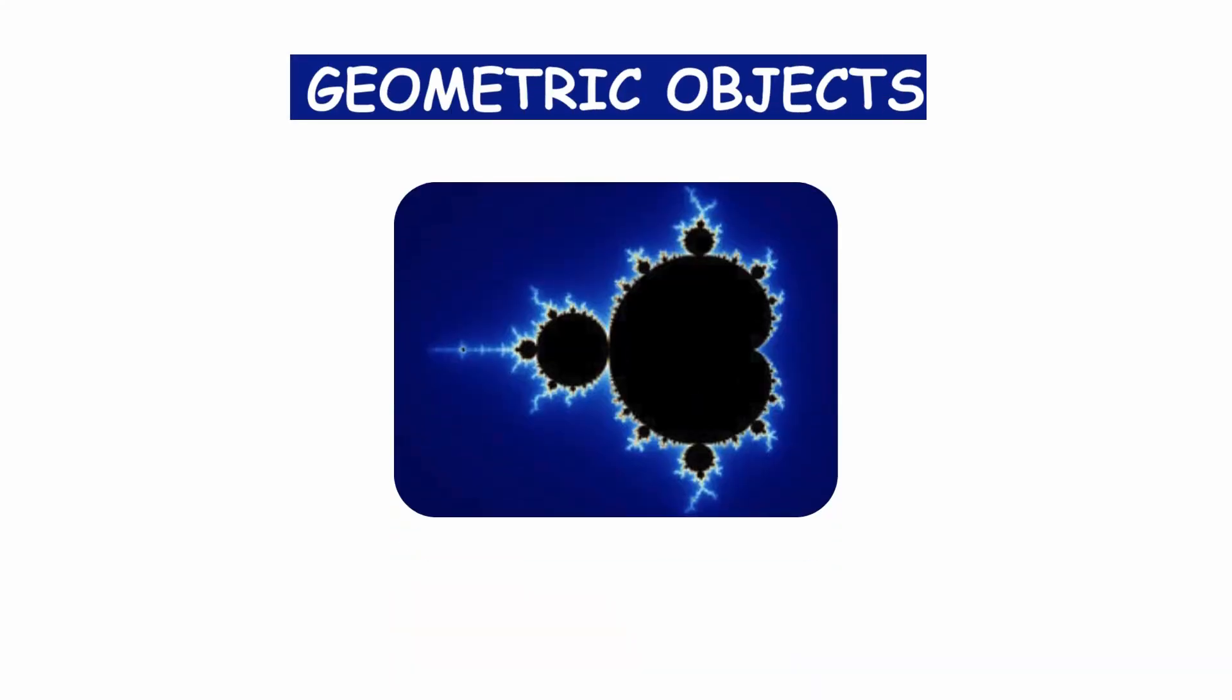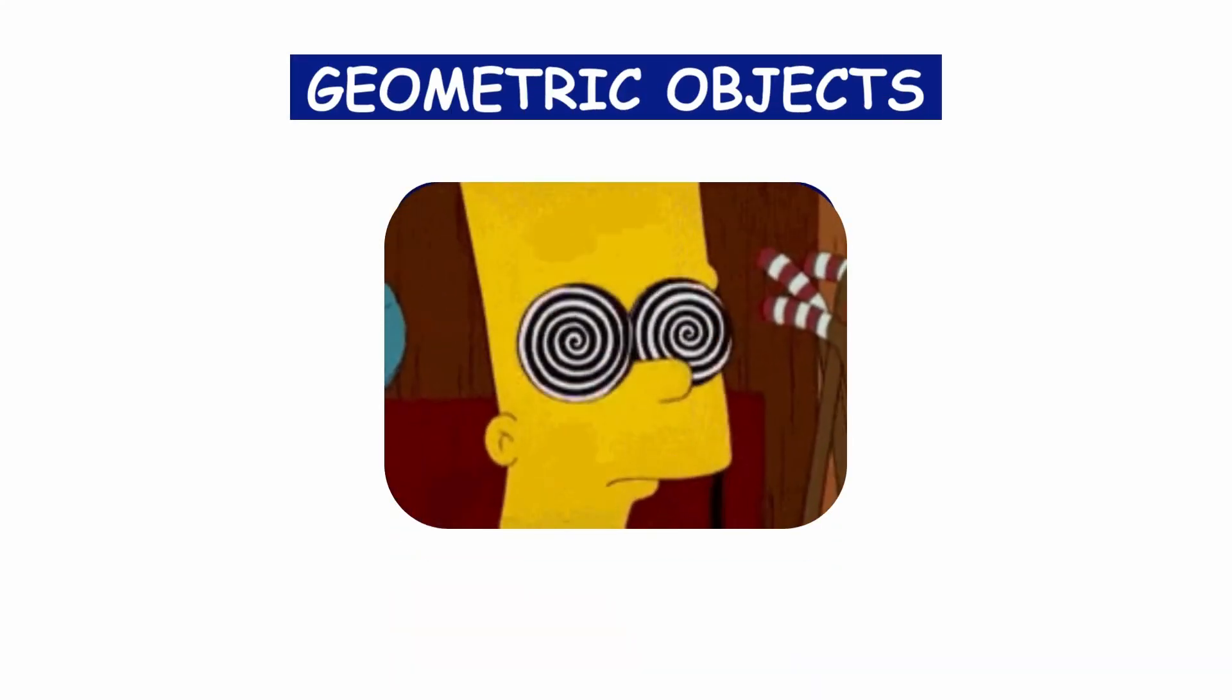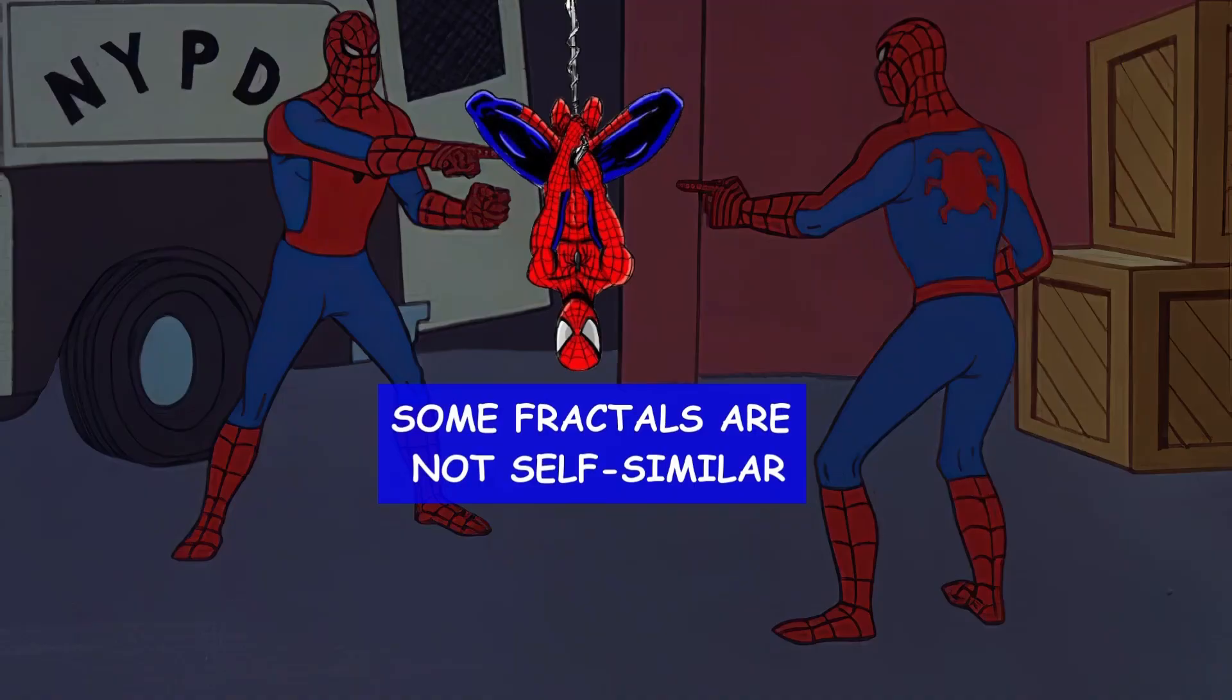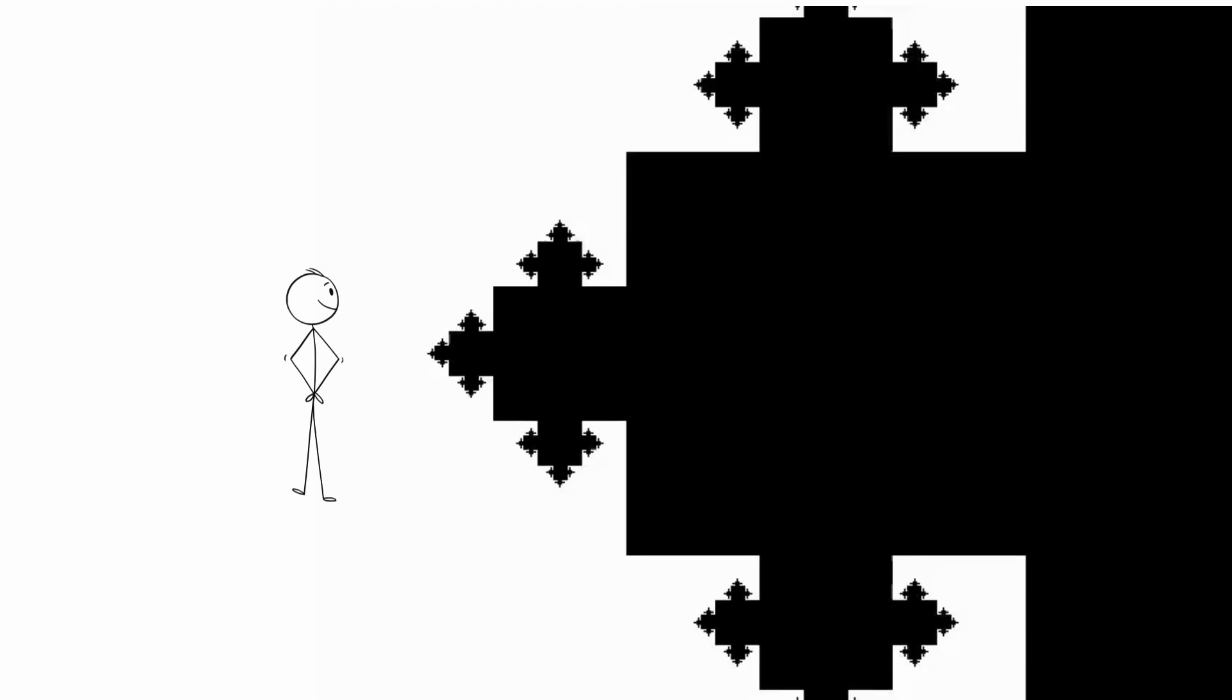Fractals are geometric objects that have a fascinating property. They are self-similar. This means that their structure repeats itself at different scales, no matter how close or far away you are looking.